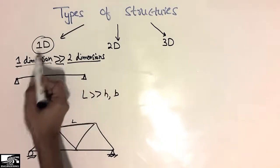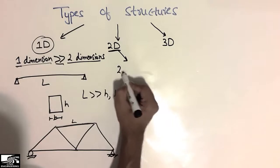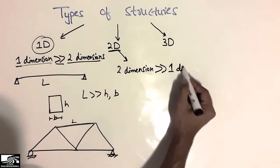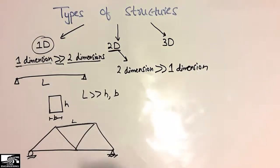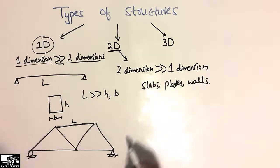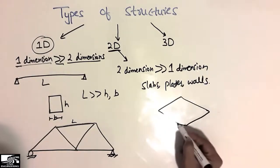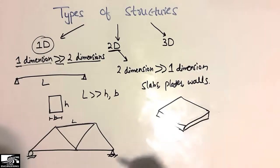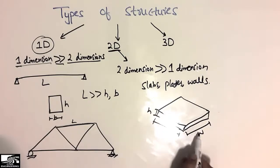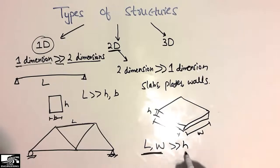When one dimension of the structure is much larger than the other two, we call it a one-dimensional structure. In the case of a two-dimensional structure, it means when two dimensions of the structure are larger than the one dimension. We call this type of structure a 2D structure. For example, slabs, blades, and walls fall under this category. If you consider a slab of any thickness, the length and the width of the slab are much greater than its thickness.